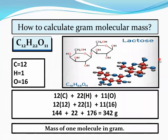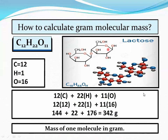Gram molecular mass: it is the same as molecular mass — we only place grams instead of AMU. Using lactose C12H22O11 as example: carbon 12, hydrogen 1, oxygen 16 AMU. Carbon appears 12 times, hydrogen 22 times, oxygen 11 times. Multiply and add: 12×12=144, 22×1=22, 11×16=176; total 342 grams. This is the gram molecular mass of lactose. Mass of one molecule in grams is considered as gram molecular mass.